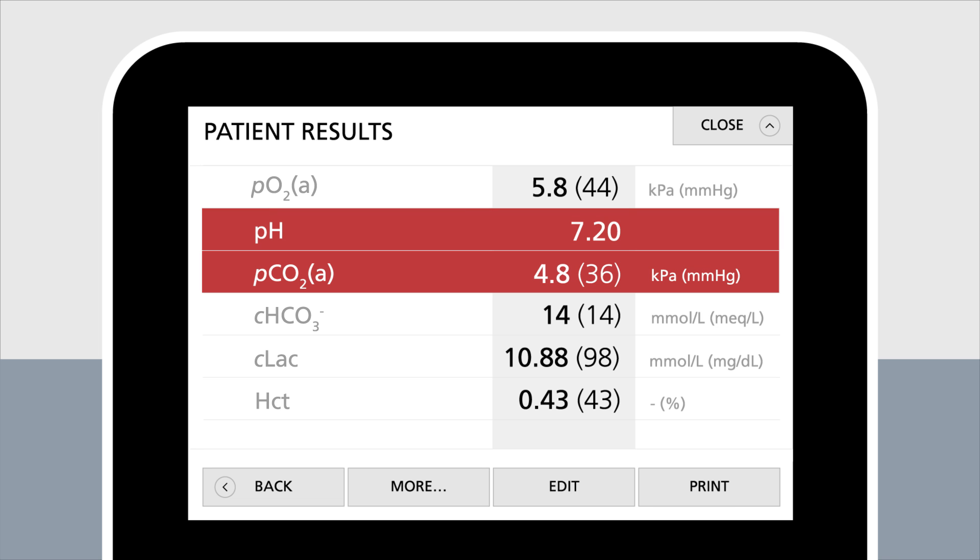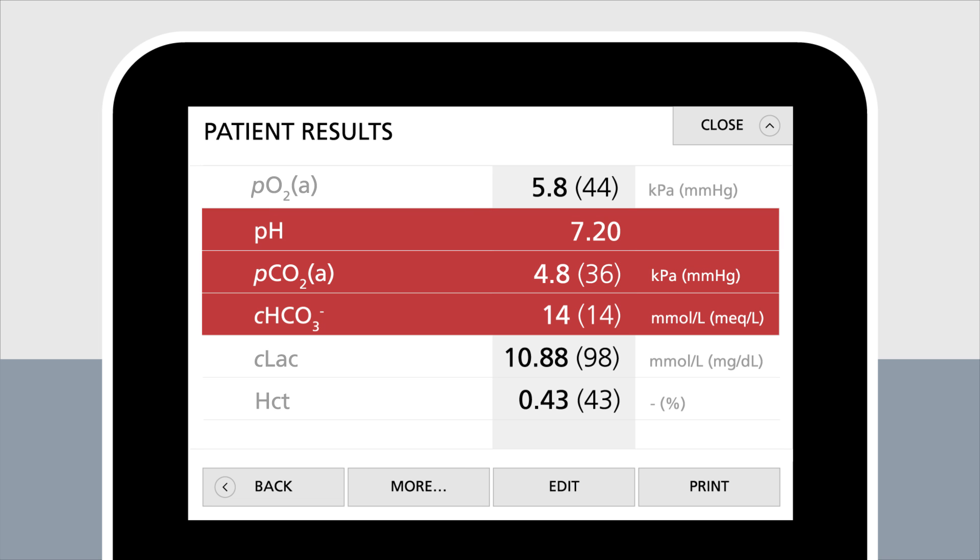The pH level, the PCO2, and the concentration of bicarbonate are relevant when deciding whether a patient is suffering from respiratory or metabolic acidosis, or respiratory or metabolic alkalosis, and if this condition is compensated or not.